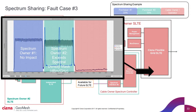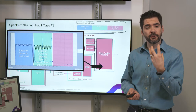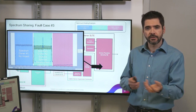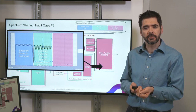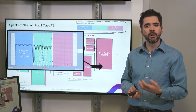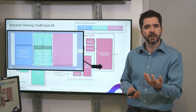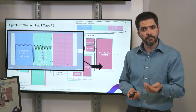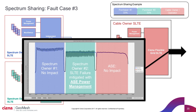Looking at the output of the spectrum controller, the controller is not able to mitigate this fault directly, as it is passing the same total power amount regardless of spectral content. Rather, the spectrum controller highlights to the cable owner that there is a fault, and allows the cable owner to replace the offending spectrum with benign ASE and return operating conditions back to normal.